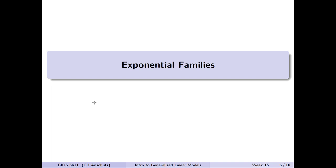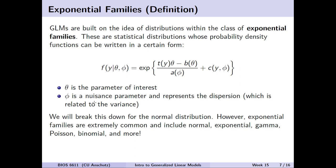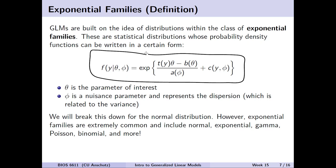To really dig into generalized linear models, we first need to take a detour into exponential families. GLMs are built on distributions within what we call a class of exponential families of distributions. These are statistical distributions whose probability density or mass functions can be written in a certain common form, listed here on screen. This common framework allows us to tease apart different components that aid in estimating things like the mean and variance of a given distribution.